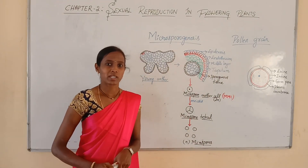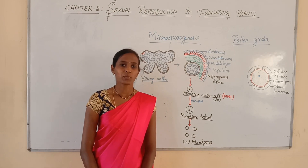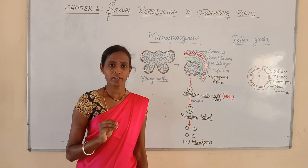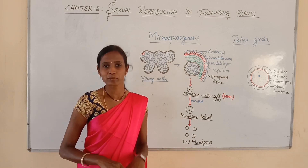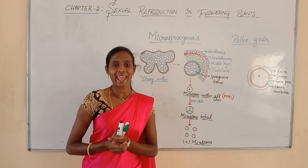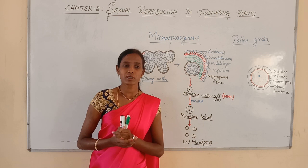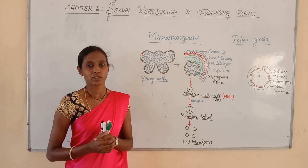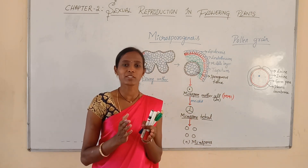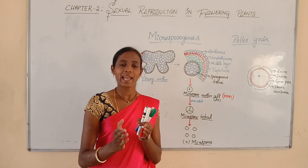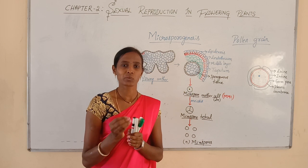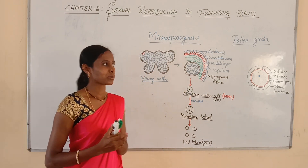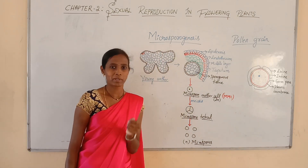Hello students, welcome back to my channel. In class 2, I gave you an impression of why the stem has to be modified into a flower. The answer is simple — it is for adaptation purposes. We have seen that adaptation is one of the important properties of all living organisms. Even in flowering plants, the stem is modified for adaptation in order to adjust to changing environmental conditions. In the previous class, we discussed microsporogenesis in a simple manner.